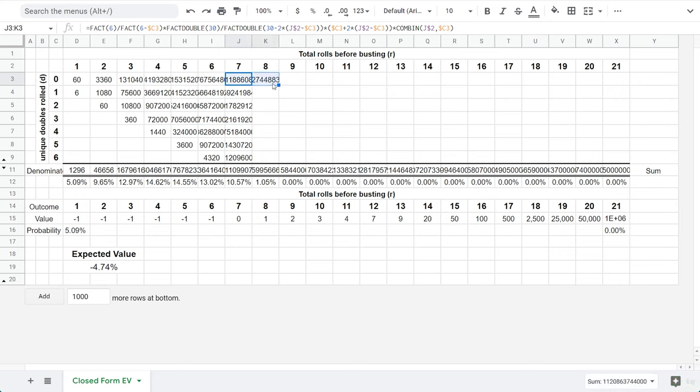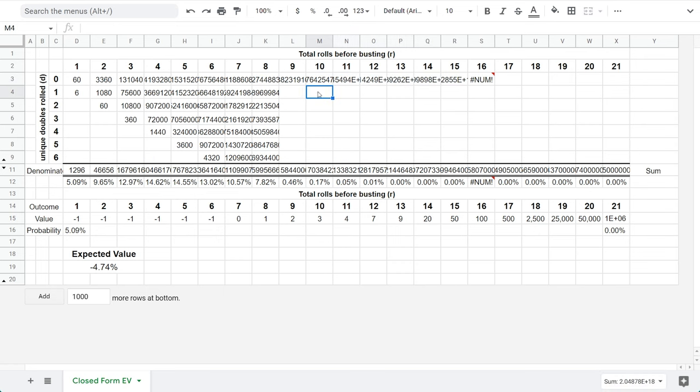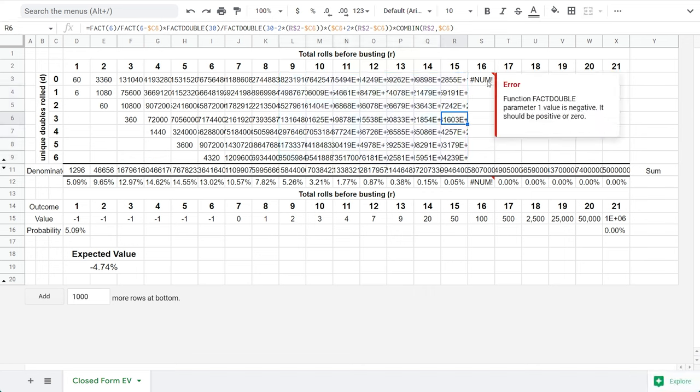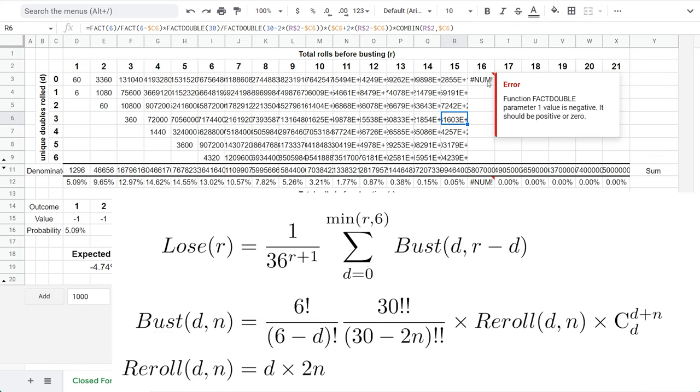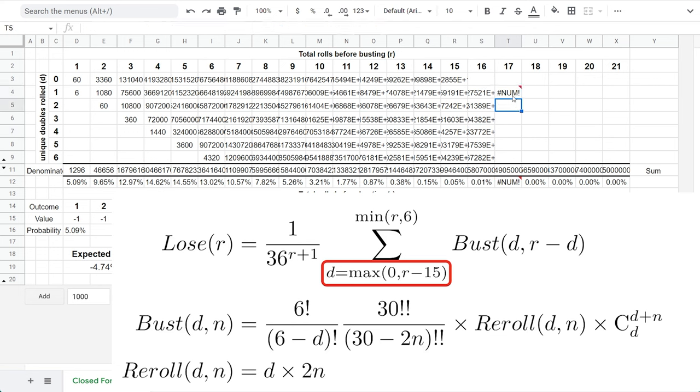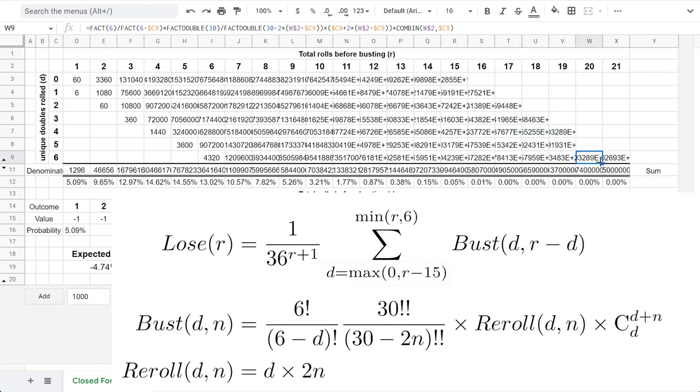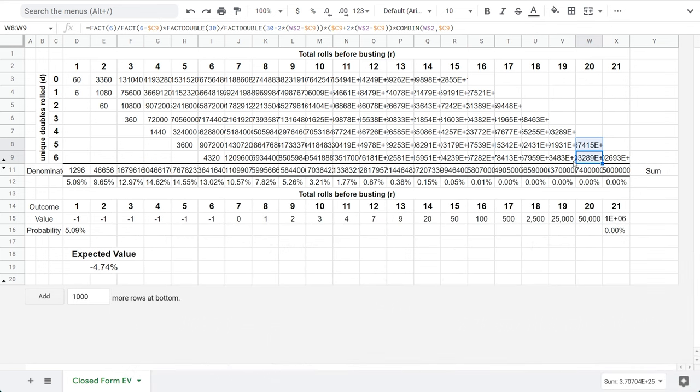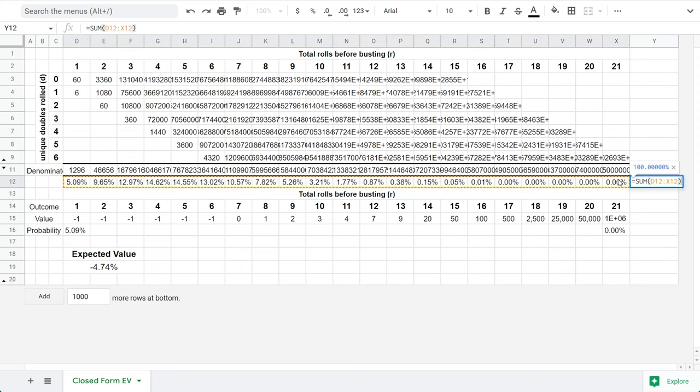We can keep copying our formula over, and we'll need to make one final adjustment at the 16 rolls column. If the player busts after 16 unique rolls, they cannot have rolled 0 doubles, because there are only 15 unique non-doubles. This error manifests as a negative double factorial, and we can solve it in a similar fashion as before. Change the sum indices to start at 0, or r minus 15, whichever is bigger. With this, I see no more errors when filling out the remaining cells. Having no calculation errors does not mean this formula, or our calculations are correct, however.